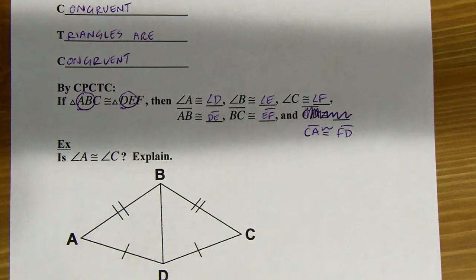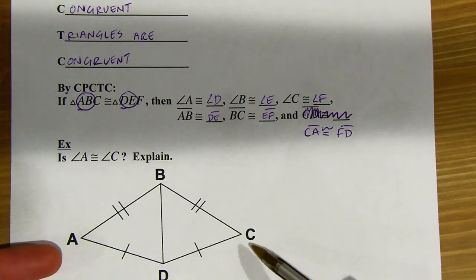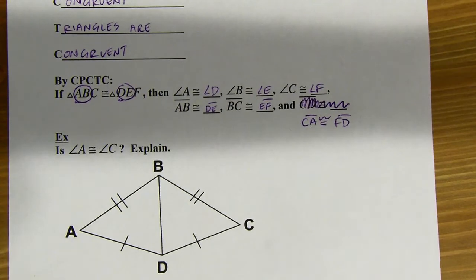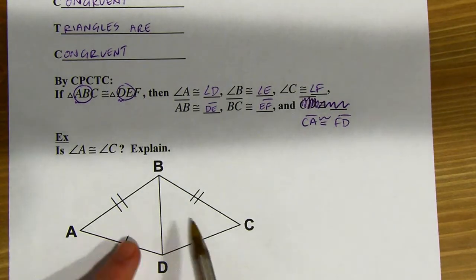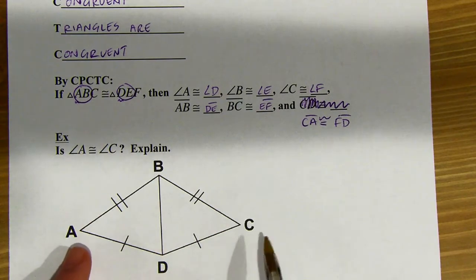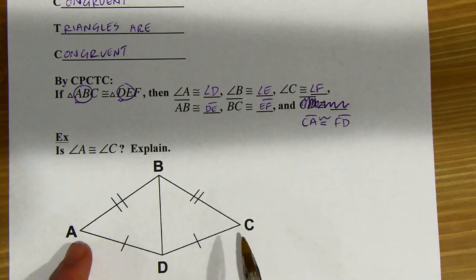Is angle A congruent to angle C? At first glance, they're not marked congruent, but let's see if we can figure out a way to get them congruent. I've got two triangles. The idea here is that first I want to show that the triangles are congruent. And if the triangles are congruent, then these would be corresponding parts of those congruent triangles, so they would be congruent as well.